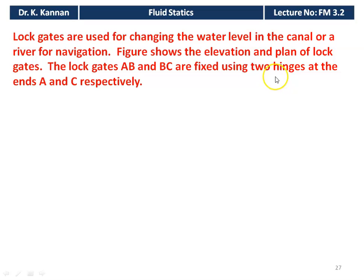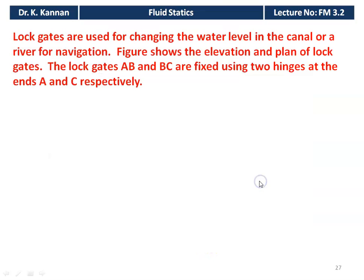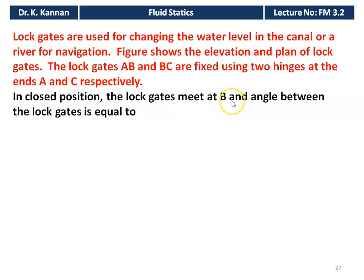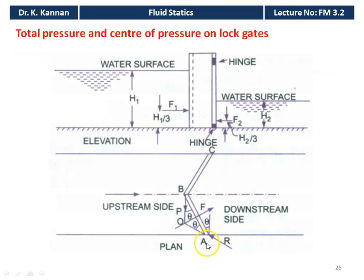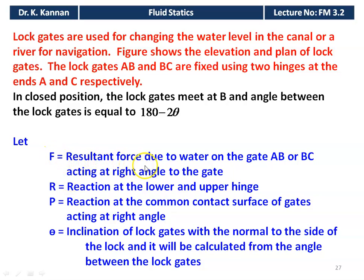The log gates A and B are fixed using two hinges at ends A and C. In closed position, the log gates meet at point B at an angle; the angle between the log gates is equal to 180 minus 2θ. Let F be the resultant force due to water on gate BC acting at right angles to the gate. R is the reaction at the lower and upper hinges, and P is the reaction at the common contact surface of the gate acting at right angles. θ is the angle of inclination.